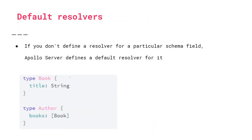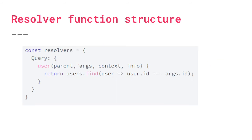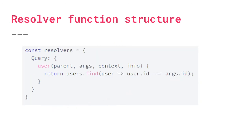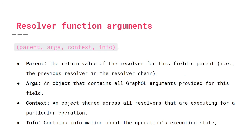Let's talk about the four resolver arguments. Args is a JavaScript object with properties for your query parameters and their values. Parent is the return value of the previous resolver. Basically, if you have to go through multiple resolvers to populate all the fields the client asked for, the parent holds the return value of the preceding resolver in the chain.